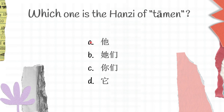A is tā, B is tāmen, C is nǐmen, and D is tā. This question is actually easy — I guess you guys got the right answer. Tāmen here is obviously B.